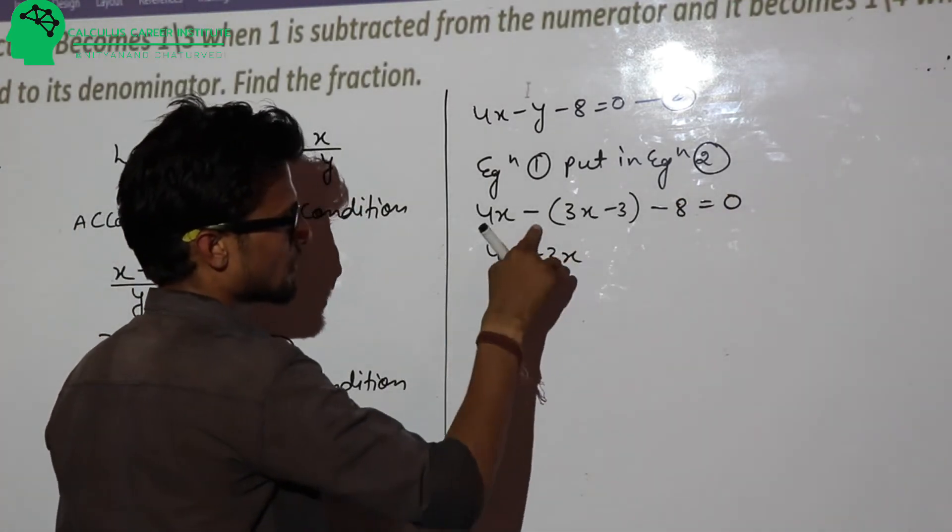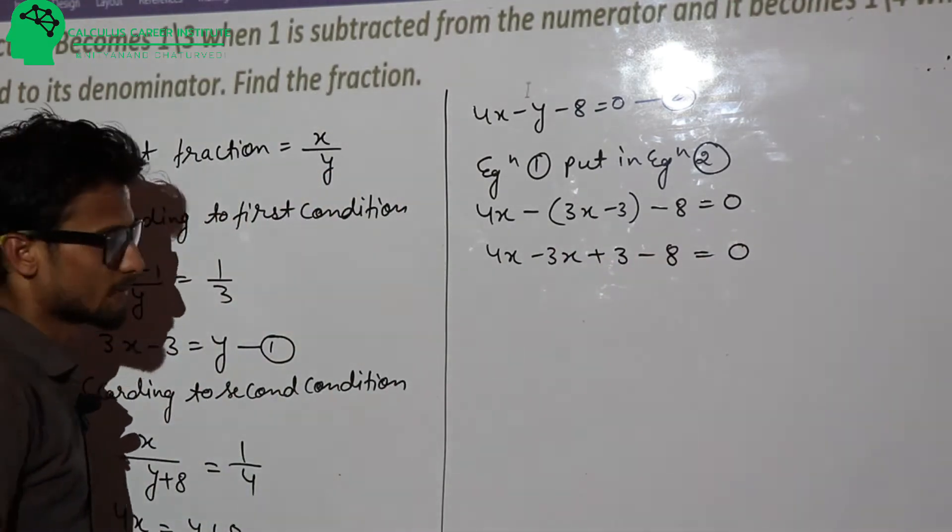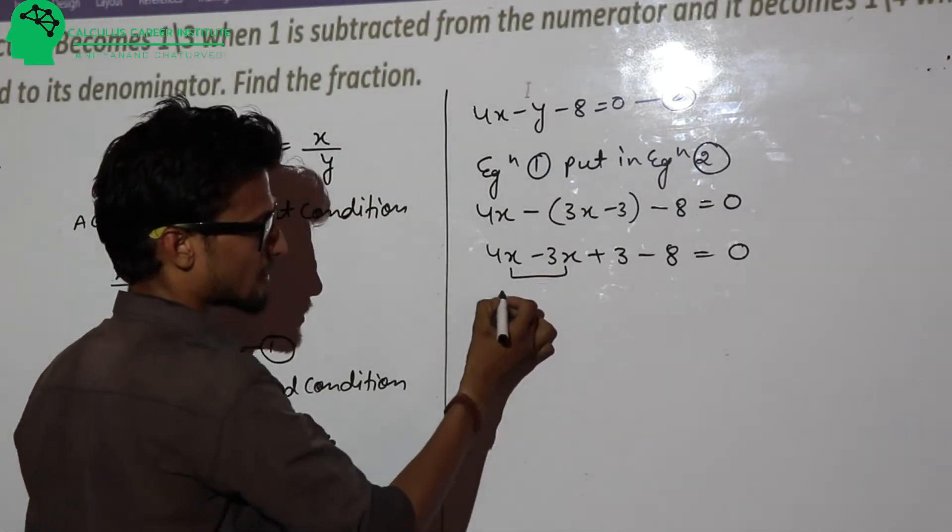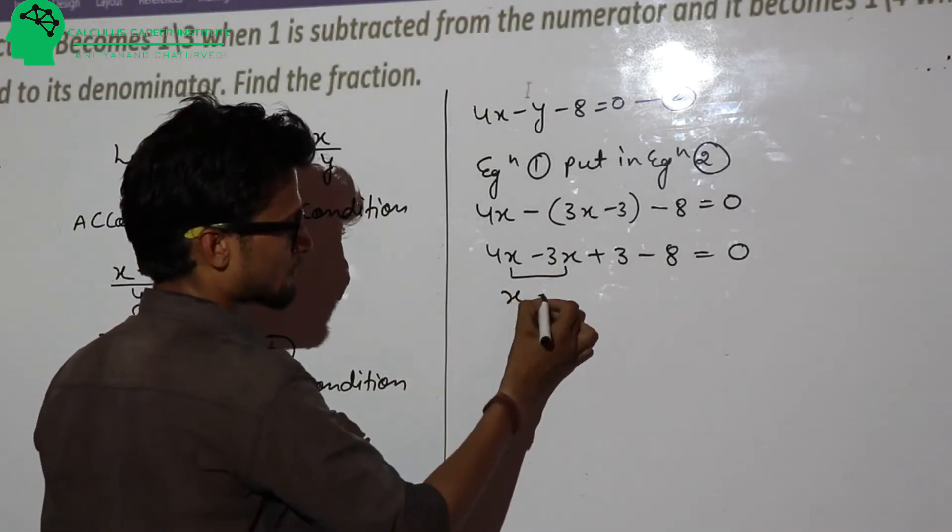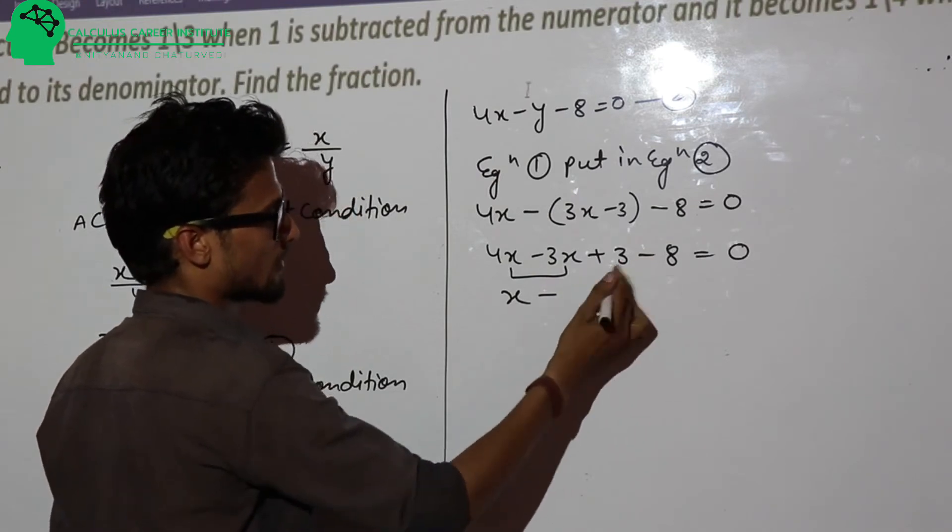If we simplify this case, 4x minus 3x is x, plus 3 minus 8 equals minus 11 equals 0.